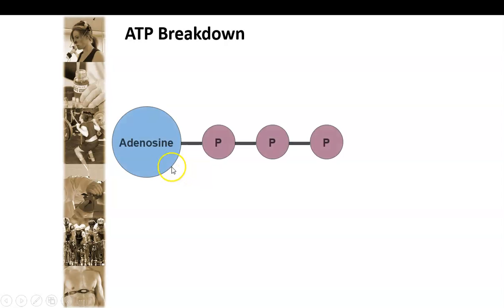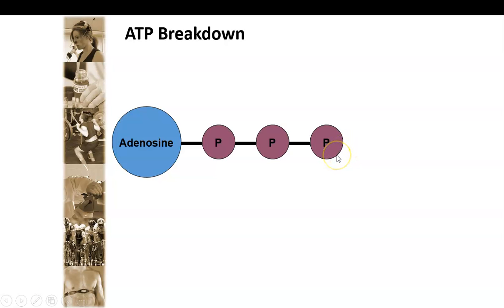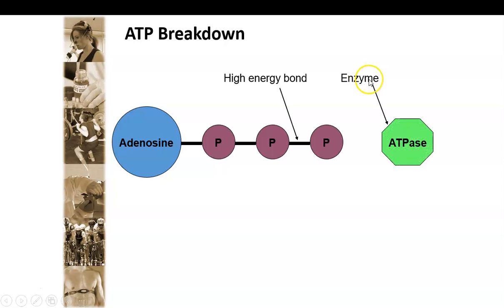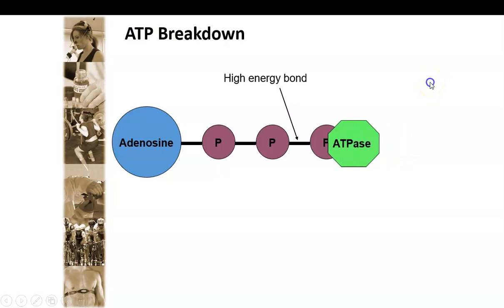We've got our adenosine molecule here, and our three phosphate groups here. In between each of these three phosphates you can see this black line. This black line is there to symbolise something called a high-energy bond. If these phosphates are broken, it releases energy. What happens specifically — when we start exercising, adenosine triphosphate with its three phosphates is broken down by an enzyme called ATPase.